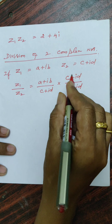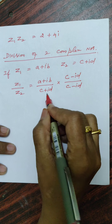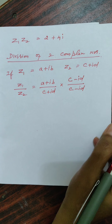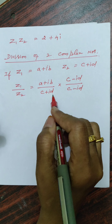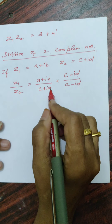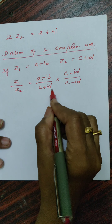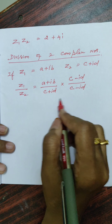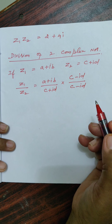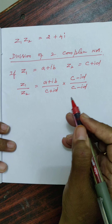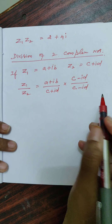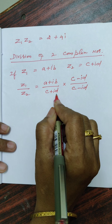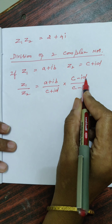Conjugate means we change the sign of the imaginary part alone. You already did this with surds — if 2 plus root 3 is a surd, then the conjugate is 2 minus root 3. In the same manner, the conjugate of c plus id is c minus id. So we multiply and divide by c minus id.